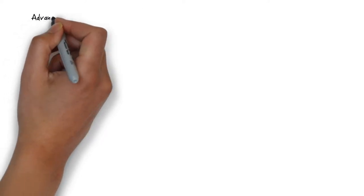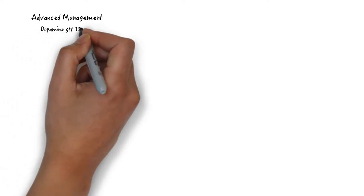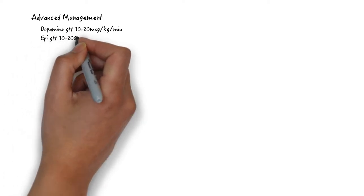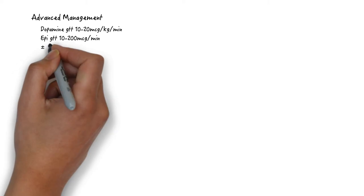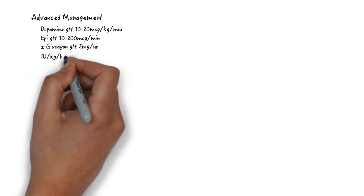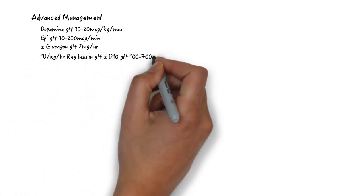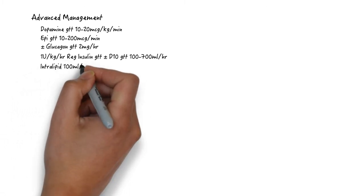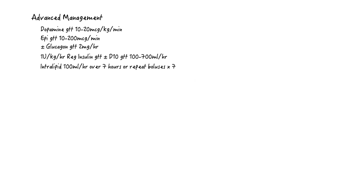If you got through all of these therapies in the first 30 minutes, kudos to you. This patient will obviously need the ICU because the next steps involves starting a whole load of drips. The drips usually involve starting or continuing the patients on dopamine, starting or continuing the patient on an epi drip. If the glucagon bolus worked, you can start a drip at 2 mg per hour. After the insulin bolus, you should start the patient on regular insulin drip at 1 unit per kg per hour, along with a D10 drip to keep the CBG between 100 to 200. You can continue to bolus 100 ml of intralipid as needed for a total maximum of 8 boluses, or start an infusion at 100 ml per hour for up to 7 hours.